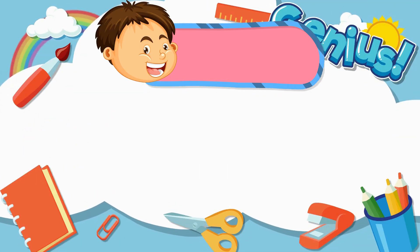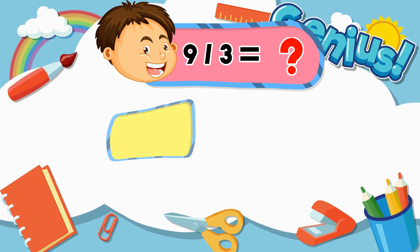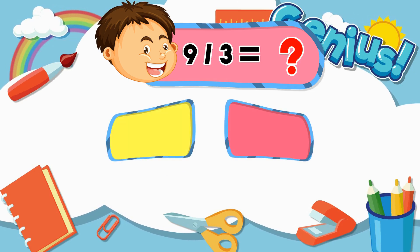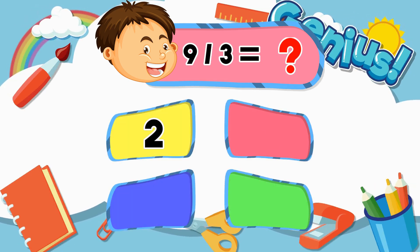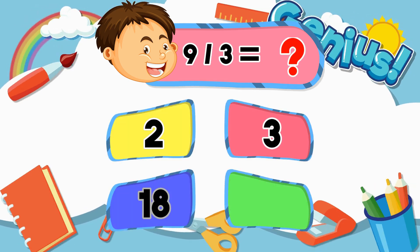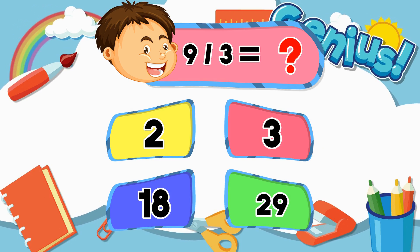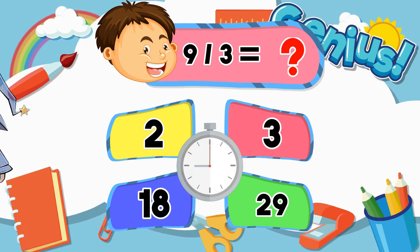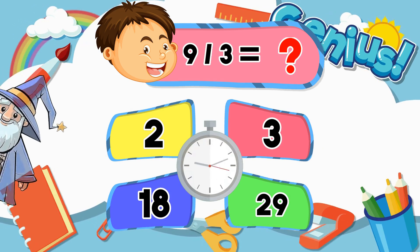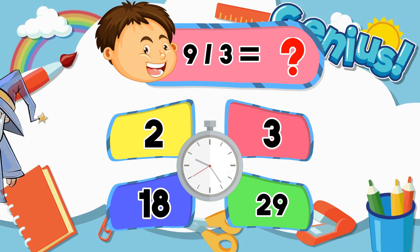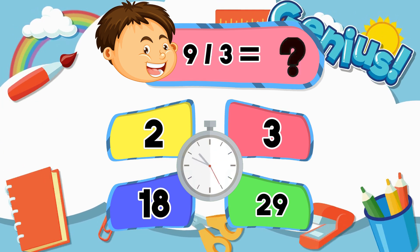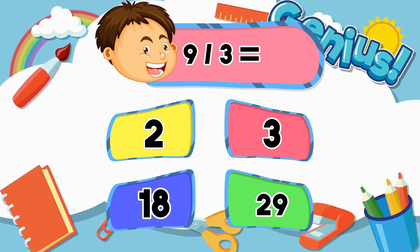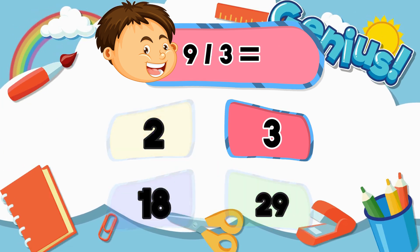What is nine divided by three? Two, three, eighteen, twenty-nine. Three.